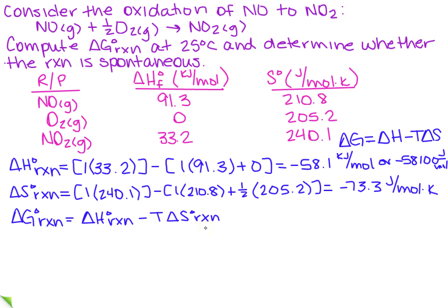So here's the actual equation. We're going to plug in the numbers that we just obtained. So I've got -58100 minus, now remember, 25°C is always 298.15 Kelvin, that should be kind of engraved in your mind by now, and this is going to be -73.3.